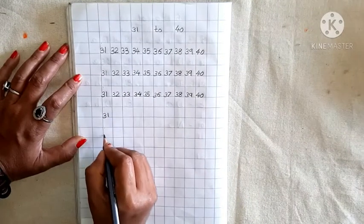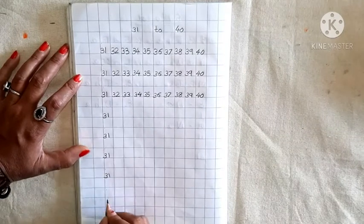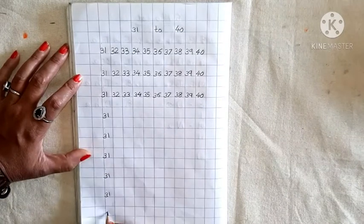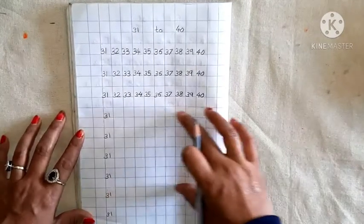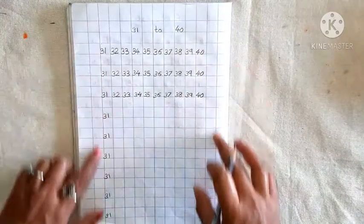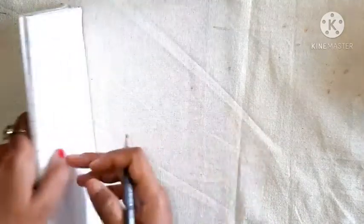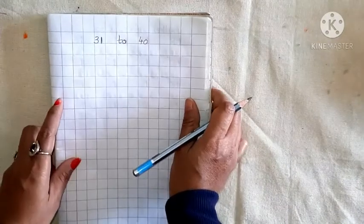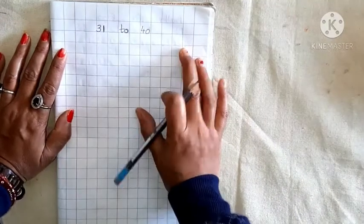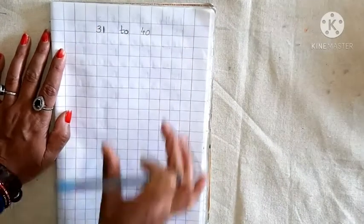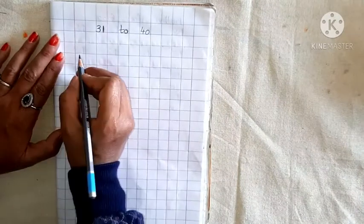Okay? मैं यहाँ पर 3, 1, write करती हूँ. Okay? देखो. मैं ने यहाँ पर 3, 1. लिखा दिया ना. तो आपको horizontal way में top to bottom. पूरा page आपको write करना है. Okay? Then next page.